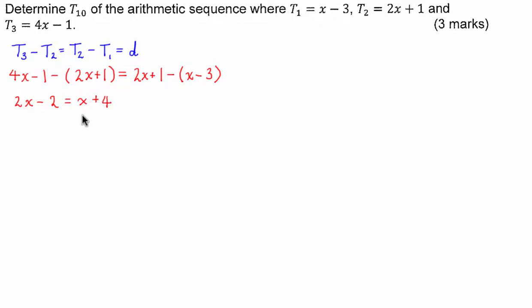So what I'm going to do now is I'm going to take the variables to the left hand side and our numbers to the right hand side so I have 2x - x is just x and I have on this side 4 + 2 is 6.